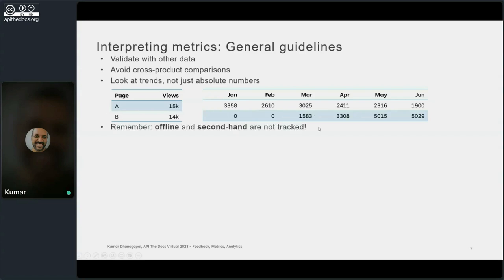Another best practice is to remember that offline usage is not tracked. If we offer users the option of downloading content as PDFs, many users might download the PDF and refer to it whenever they need help, and there's no way to use web analytics to track that offline content usage. We should also keep in mind that users in some environments — like government settings — work within firewall networks, meaning they cannot access online content and are necessarily using documentation offline.